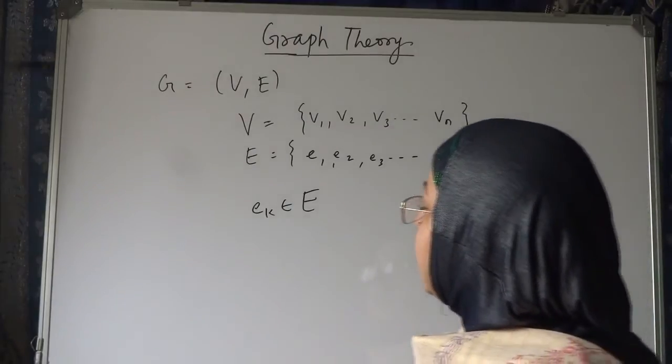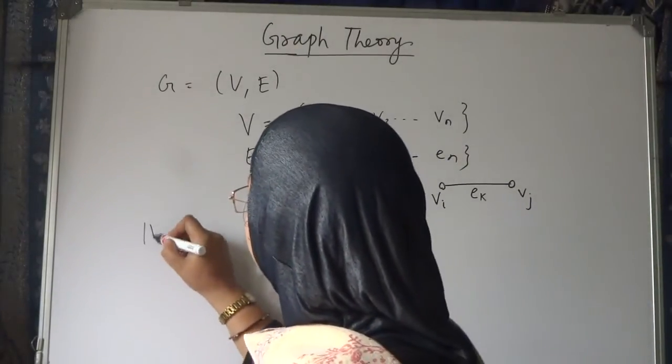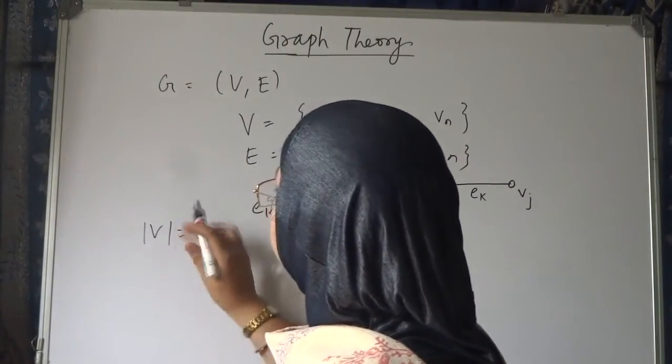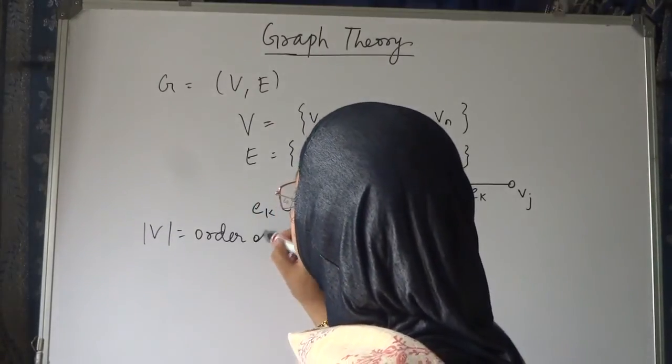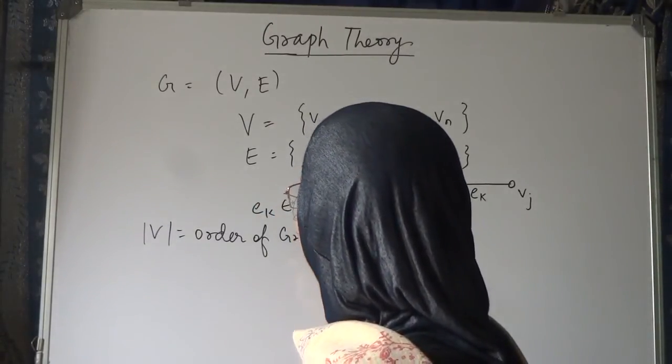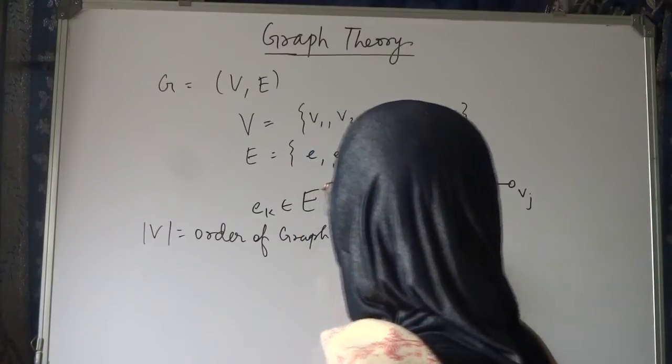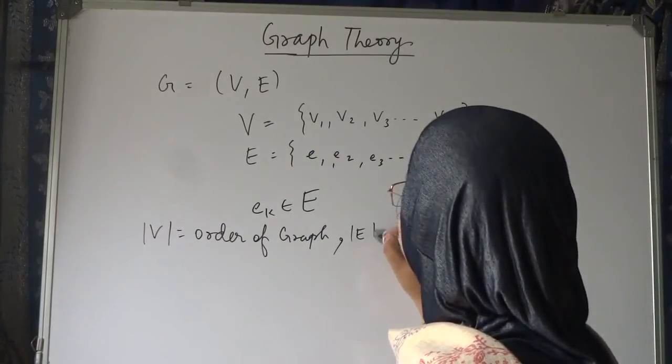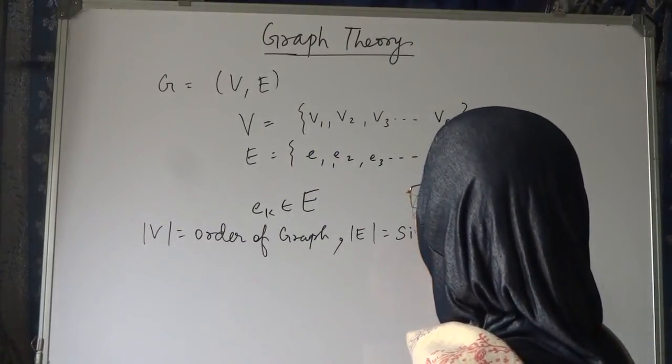Now, we shall see what is |V|. This is known as mod V, or the order of graph. And mod E, or |E|, is known as the size of graph.